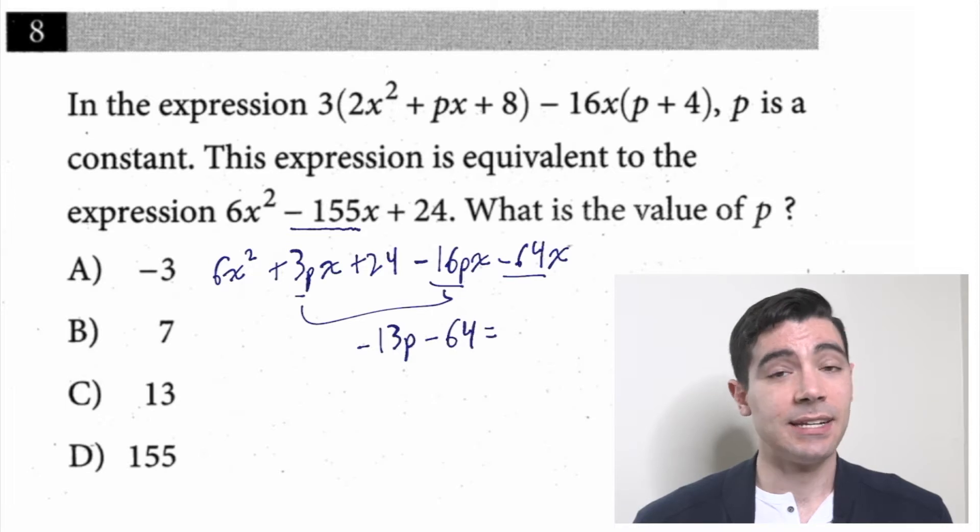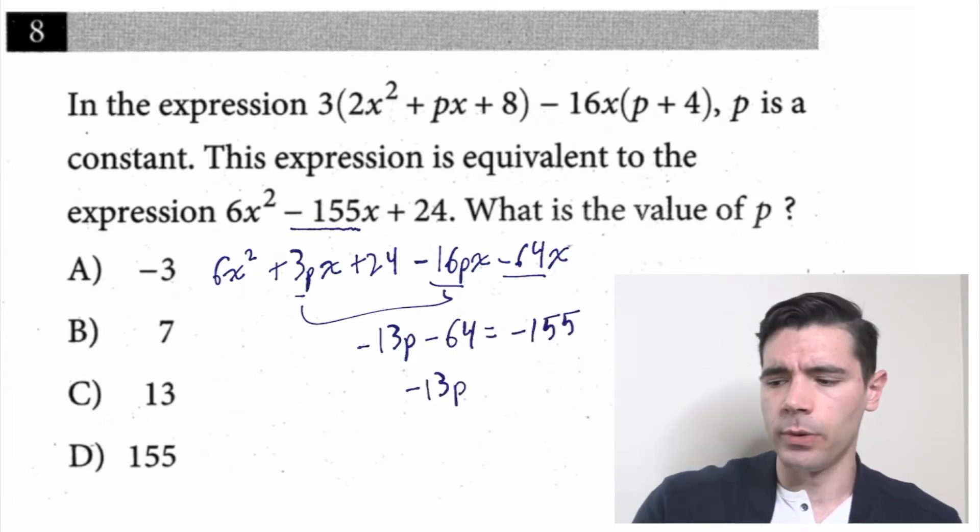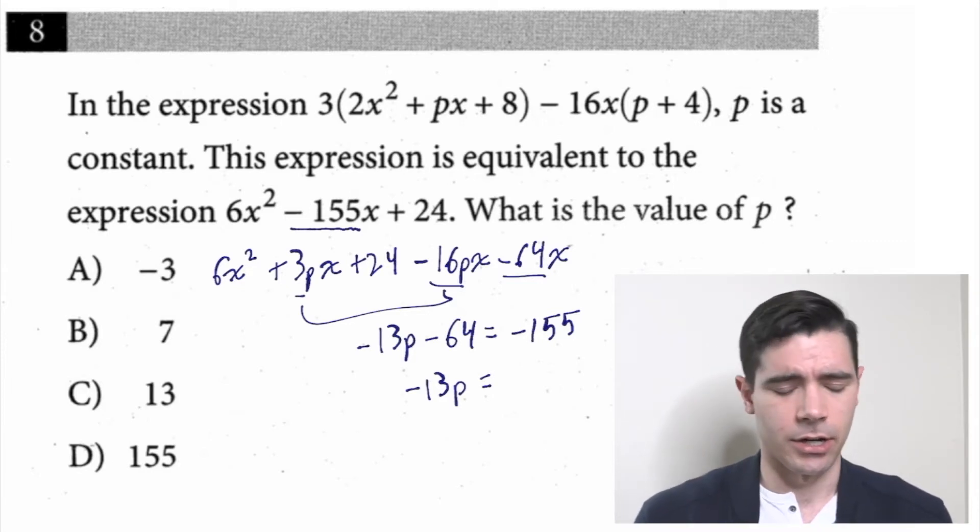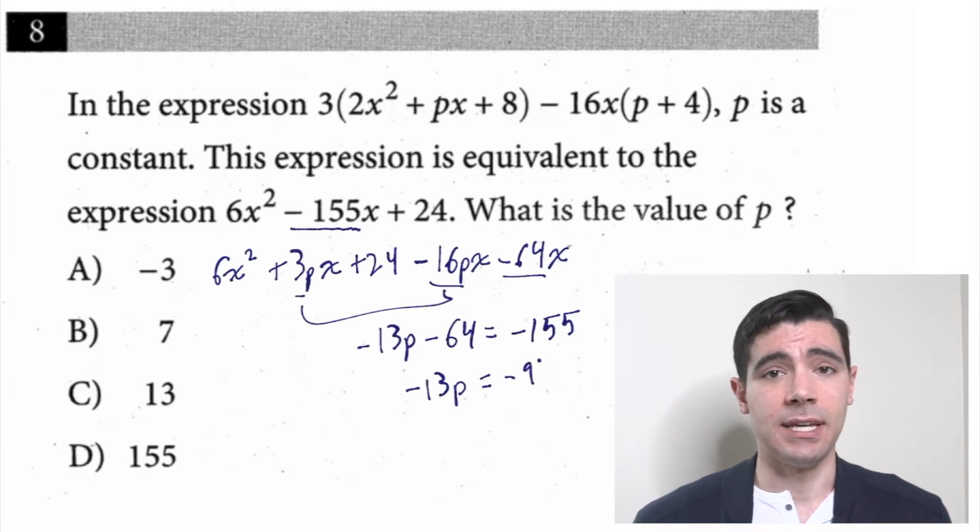I'll add 64 to both sides. -155 + 64, you've got to do it in your head. What a bummer. No, we live in an exciting time. Bust out that calculator. Turns out to be negative 91. So -13p = -91. Divide both sides by negative 13. The negatives are going to cancel, and p equals 7.